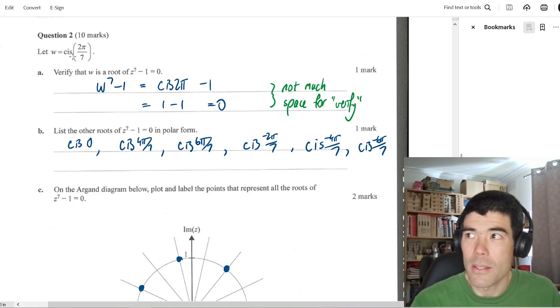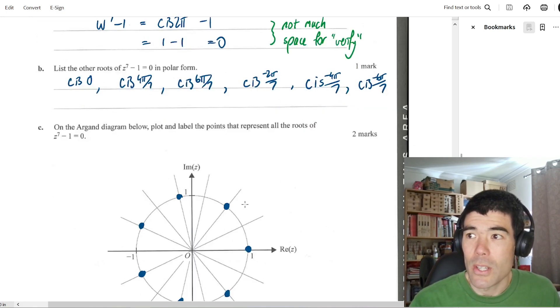So I'll go into a little bit more detail on this complex numbers extended response question. We had w as cis 2 pi on 7. Part a, verify that w is a root of z to the 7 minus 1 equals 0. So verify, we're just going to sub it straight in, take it to the power of seven and then subtract one. We don't have a lot of space. It's probably a bit of a criticism of this question in a few places that we're supposed to show our working. We've only got two lines there, but I think the assumption is we're going to go across at some stage and maybe go in two columns. Anyway, so list the other roots. Again, not a lot of space. We're going to list six more roots in polar form, but there they are, and then plot them on the argand diagram. So equally spaced around a circle, seven roots. Fair question for two marks.